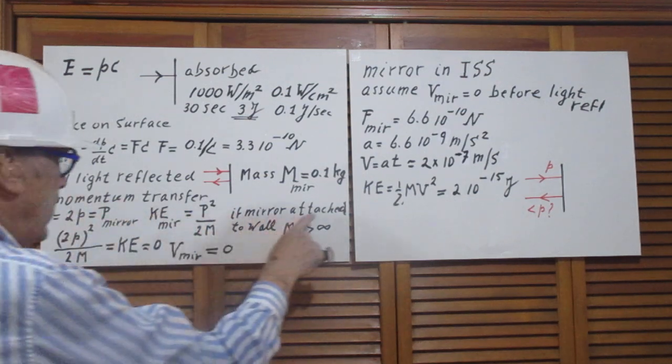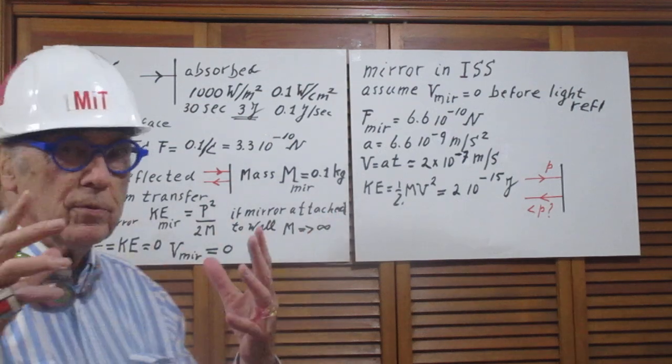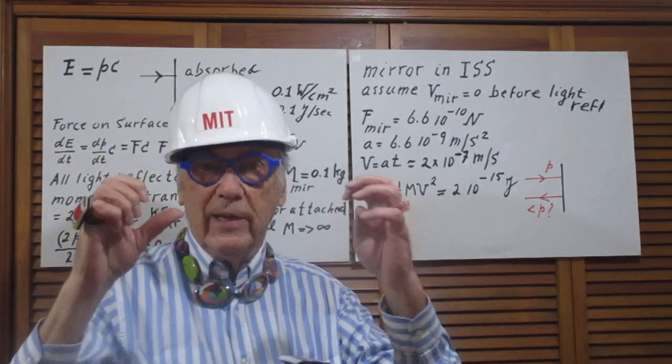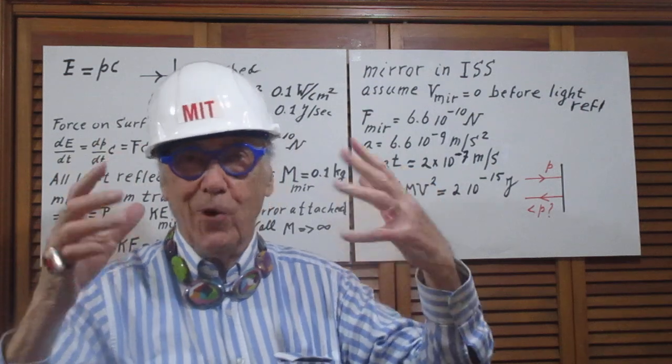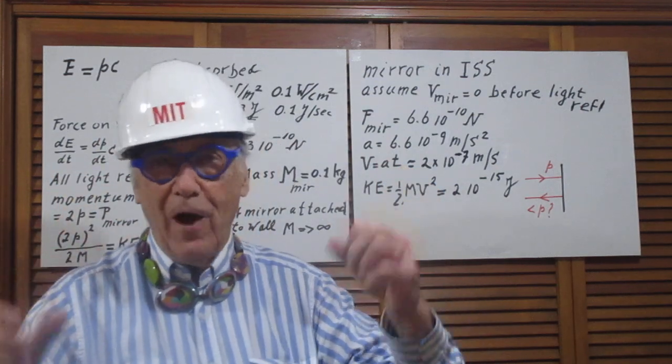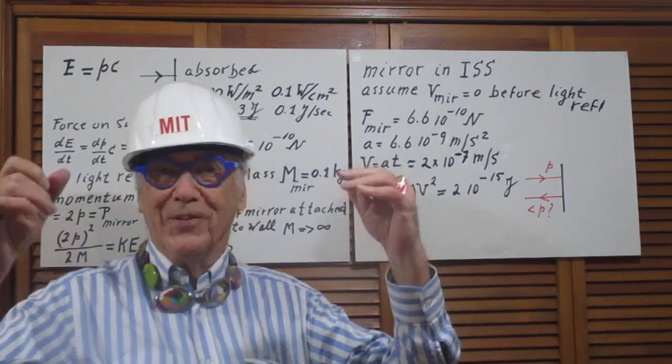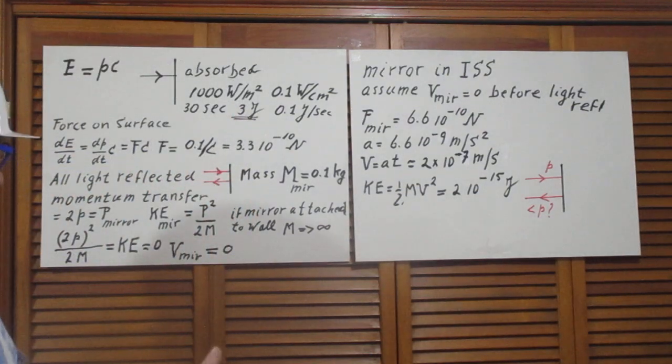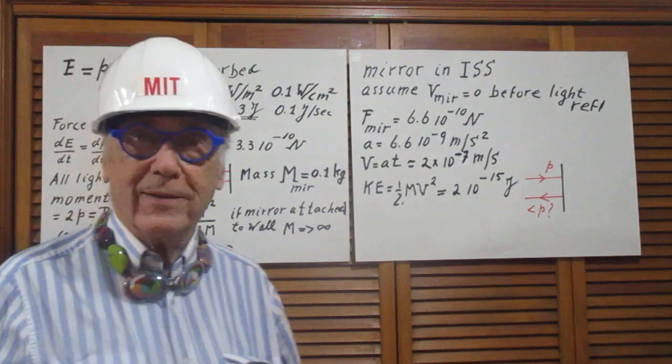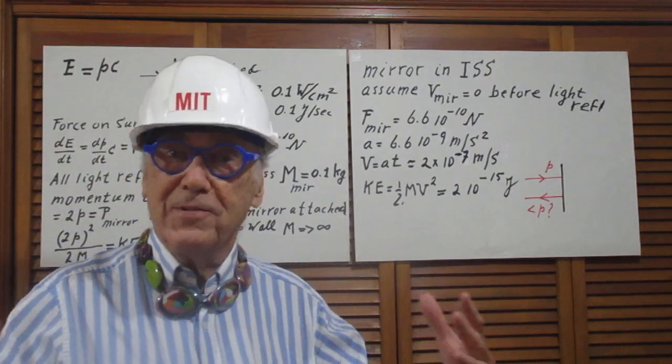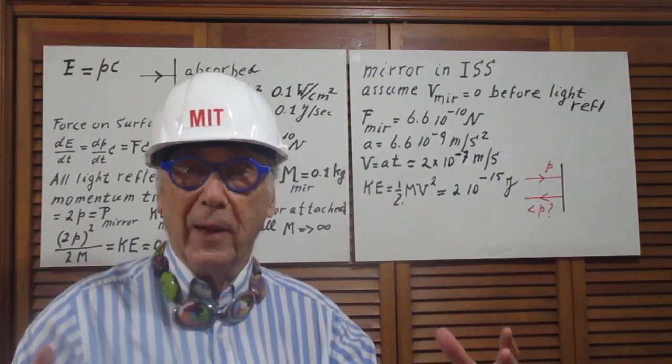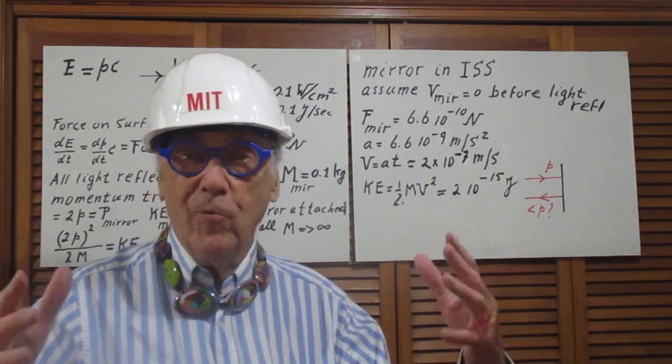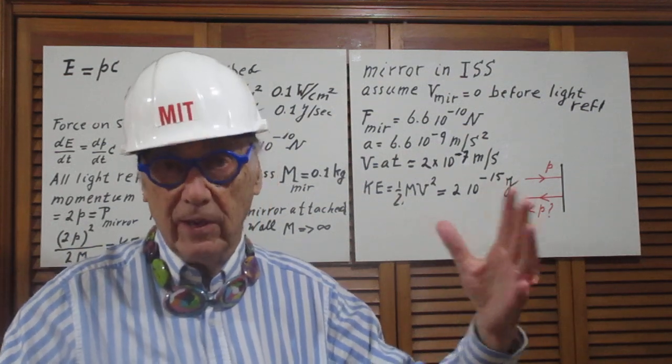Now if the mirror were attached to a wall, solidly attached to the wall, and the wall is solidly attached to the house, and the house is solidly attached to the ground, then the mass of the mirror is not what matters. What matters is the mass of everything attached to the mirror, and that capital M would be very close to infinitely high, of course.